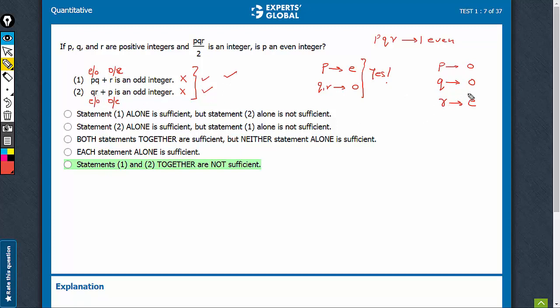And Q into R here would be odd into even, something even. So this is working fine, plus P, P is odd. So yes, even plus odd would be odd. So this statement is also working fine for this set of values.